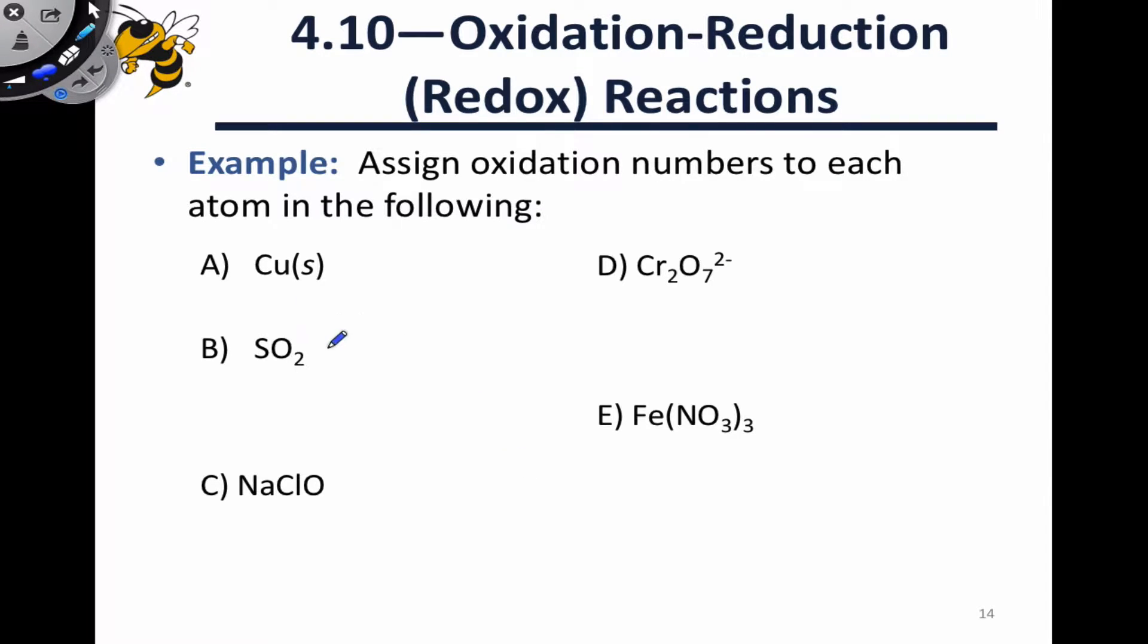Let's practice assigning oxidation numbers using the examples below. Item A is pretty straightforward. This is copper in its elemental form, no formal charge, nothing weird there. This is copper solid, solid metal. The oxidation state of copper in this case is zero because it's the elemental form of copper.